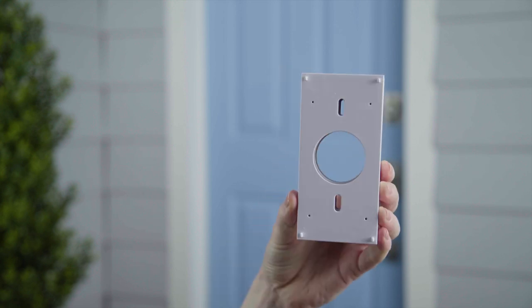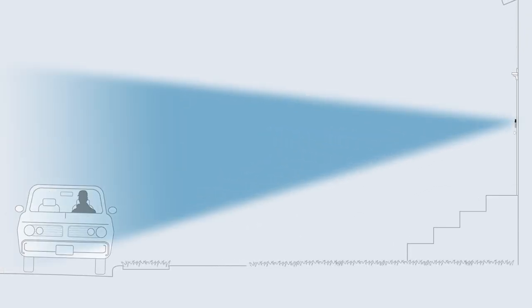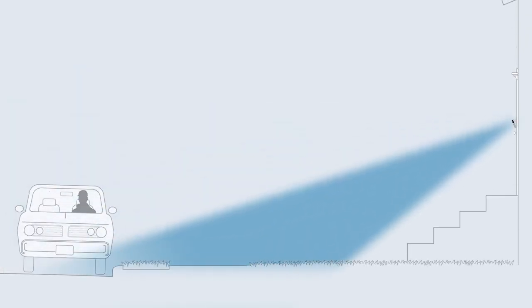The purpose of this is to avoid unwanted motion. Angling your Ring Doorbell downwards can reduce motion events from street traffic.